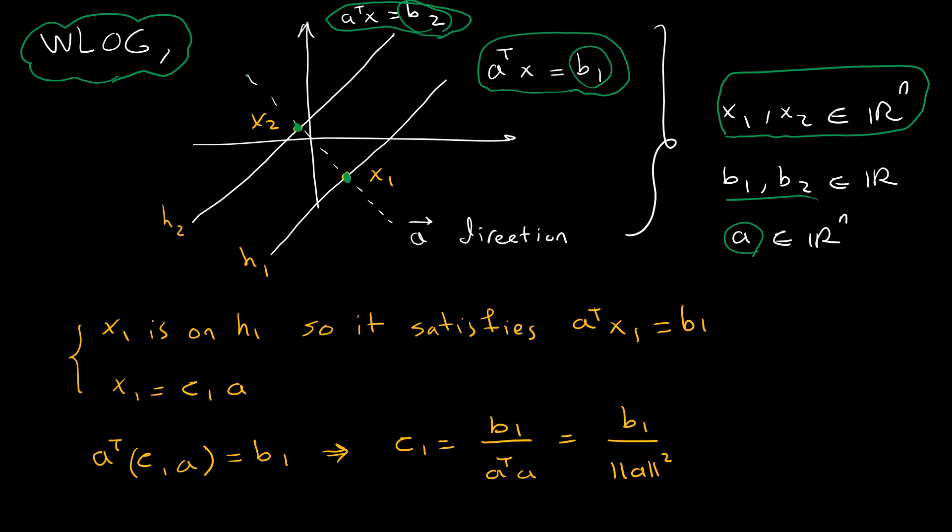Both special points are multiples of a. To characterize x1, I know x1 is on h1, so it satisfies a^T x1 = b1. Also, x1 = c1 * a. If I plug that in, I can solve for c1 to get c1 = b1 / (a^T a) = b1 / ||a||^2.